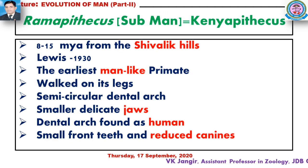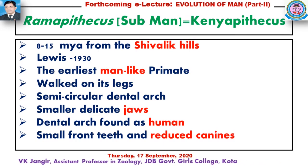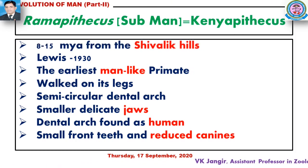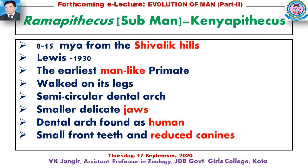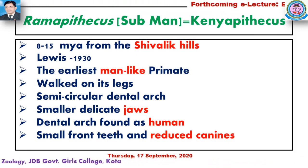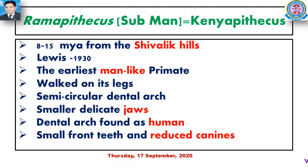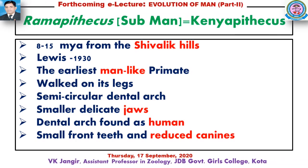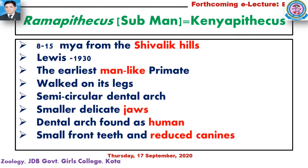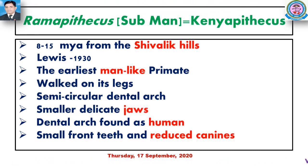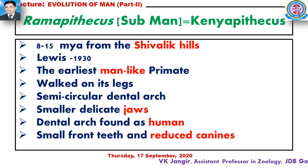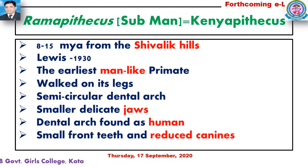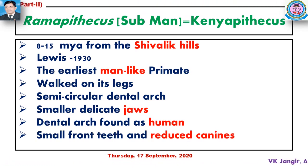Ramapithecus, also called Kenyapithecus, was an ancestor of humans who lived 8–15 million years ago. It was discovered from Shivalik fossils published around 1930. As the earliest man-like primate, it walked on its legs, had a semi-circular dental arc, a smaller delicate jaw with dental arc similar to humans, and small front teeth with reduced canines.